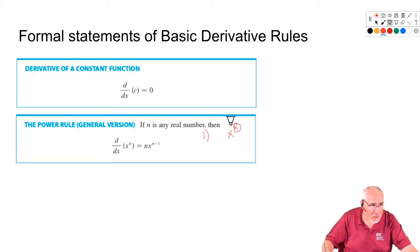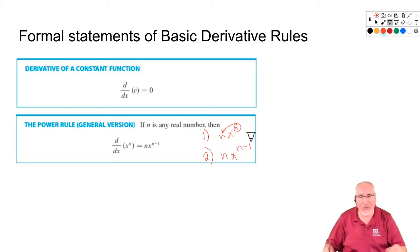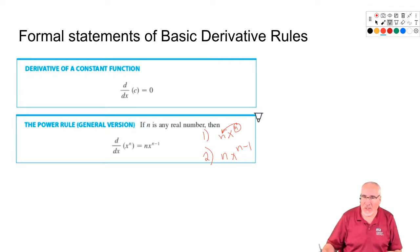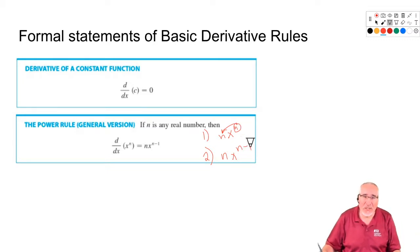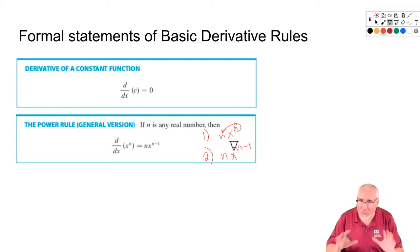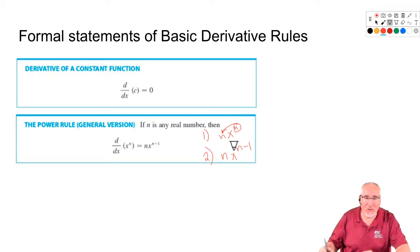First step: take the exponent and bring it down. Second step: subtract one from the exponent. If you don't do it in the right order, there's a tendency to subtract one first and then bring down the wrong value — the exponent minus one. So make sure you bring it down first, then subtract one.